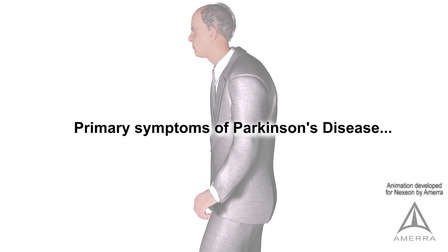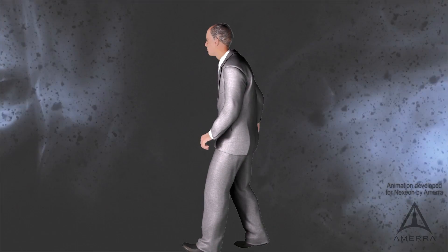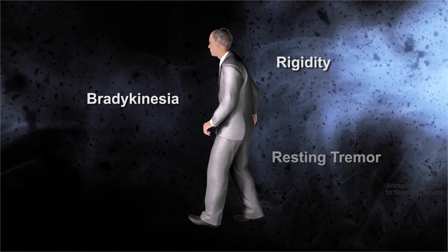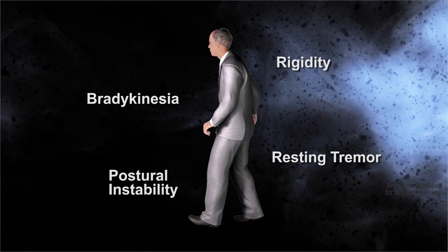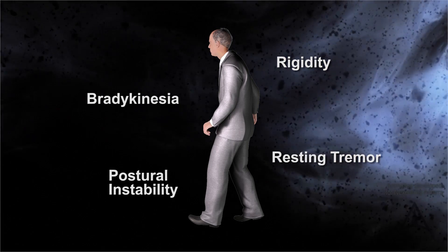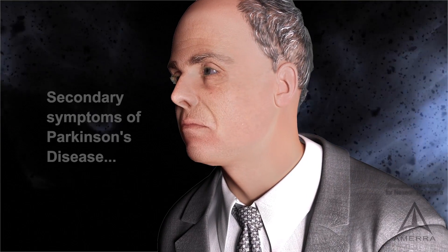Parkinson's disease is a progressive disorder of the nervous system that affects movement. It develops gradually, sometimes starting with a barely noticeable tremor in just one hand. Parkinson's disease symptoms worsen as the condition progresses over time.